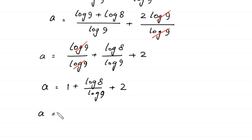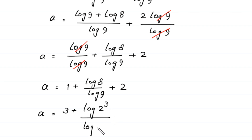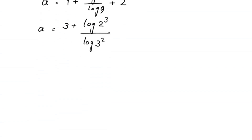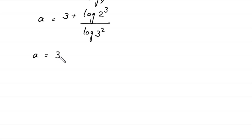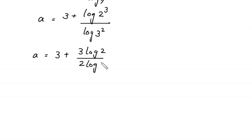Next, a is equal to this 1 plus this 2 will become 3, plus log of 8 can be written as log of 2 cubed divided by log of 9, which can be written as log of 3 squared. So a is equal to 3 plus log of 2 to the power 3, which can be written as 3 times log of 2, divided by 2 times log of 3.